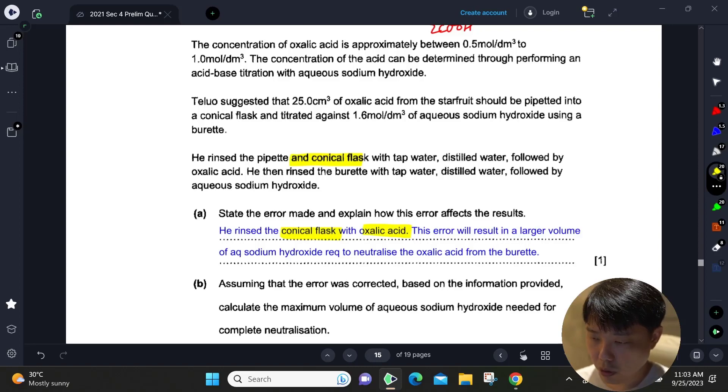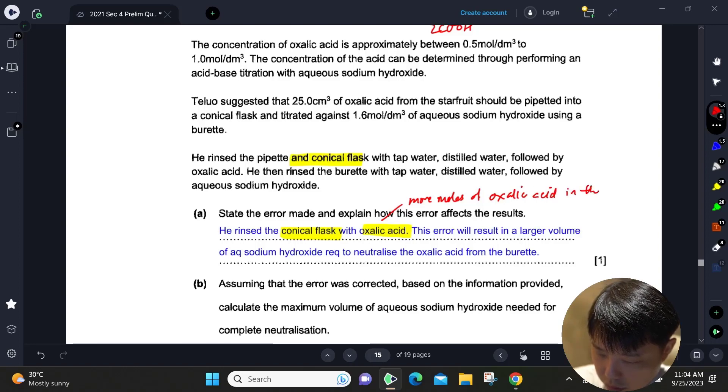This means there are more moles of oxalic acid in the conical flask, which leads to inaccurate titration readings.